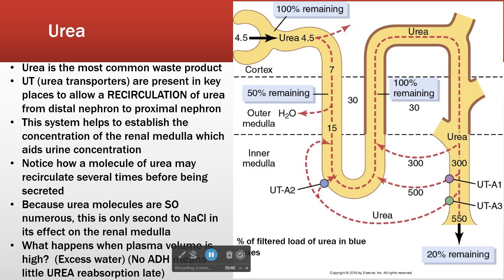The proximal convoluted tubule is obligately reabsorbing everything, so we pull some urea out there as we go further down. As water is pulled out in the descending limb, our urea concentration is increasing. The total solute remaining has changed a little because some urea was reabsorbed, and then water is pulled out, so we increase concentration — both things are happening.